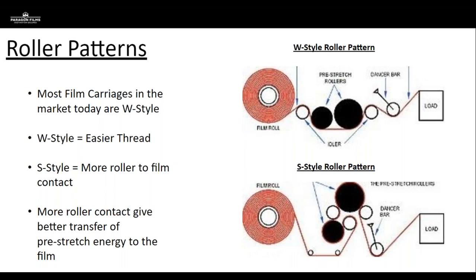Regarding S and W thread patterns — two different thread patterns found on different types of equipment — the key thing to highlight is that the amount of film-to-roller contact is critical when pre-stretching the carriage. This is what we call F1, the internal force inside the carriage. The amount of contact helps maintain the on-pallet stretch as the film is pressed against the rollers. If you have worn-down rollers or pinch bars that aren't pushed up tight enough, this can cause slippage as the film feeds through the carriage. When film slips on those rollers, you're losing on-pallet stretch, which negatively impacts containment. If you measure containment, you will see this.